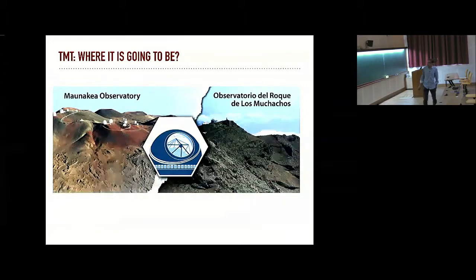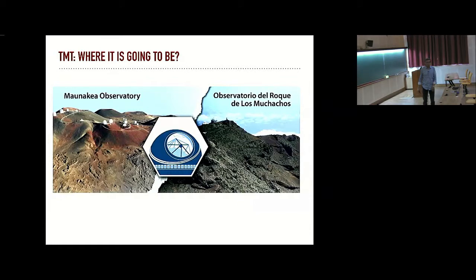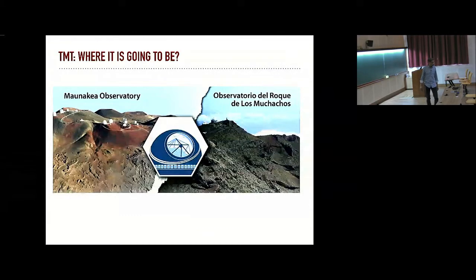There are two possible sites identified. One is Mauna Kea. This is what the initial thing but there are some issues related to the site. It is more or less settled now but we have a backup place which will be in La Palma. The idea is to have this telescope operating in the northern sky compared to two other telescopes which will be operating in the southern sky.